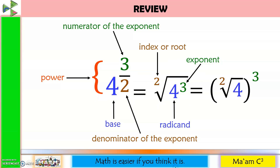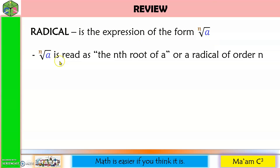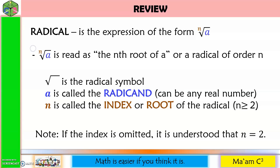This expression is equivalent to the square root of 4 cubed. 2 is what we call the index or root, which is the denominator of the exponent in the exponential form. 4 is the radicand, which is the base in exponential form, while 3 is the exponent, which is the numerator of the exponent in exponential form. This is also equivalent to the quantity of the square root of 4 to the third power. A radical is an expression in this form, read as n-th root of a, or a radical of order n. This is the radical symbol. a is the radicand, which can be any real number, and n is the index or root of the radical, which is greater than or equal to 2. Take note that if the index is omitted, it is understood that n is equal to 2.